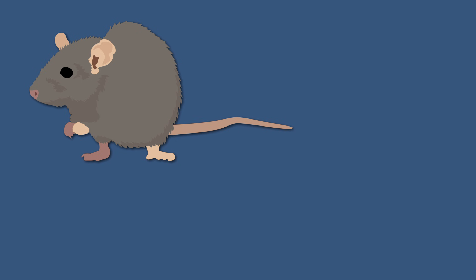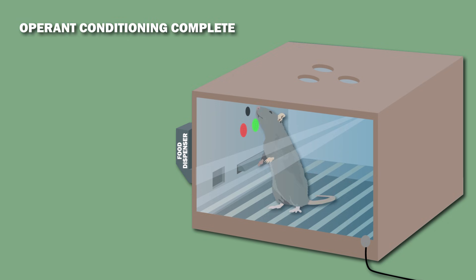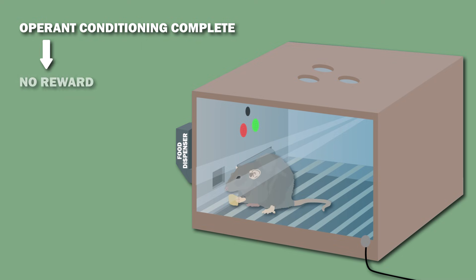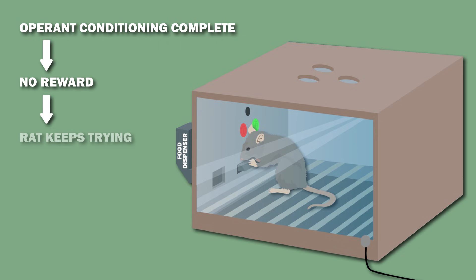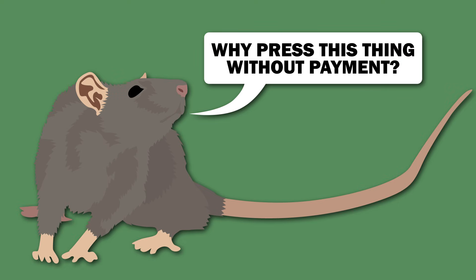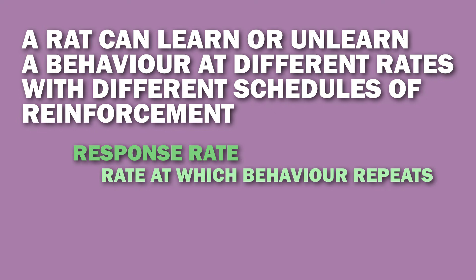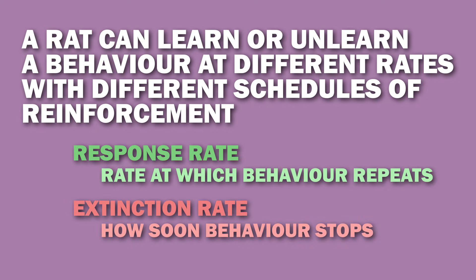There have been further experiments done with rats in the Skinner box. After a rat has received operant learning and has learned to press a lever to receive a food pellet, what happens if the lever is pressed but no food pellet is received? At first the rat will keep pressing the lever, but eventually it will stop and the behavior will be extinguished. A rat can learn or unlearn a behavior at different rates with different schedules of reinforcement — termed the response rate, the rate at which behavior repeats, and the extinction rate, how soon the behavior stops.